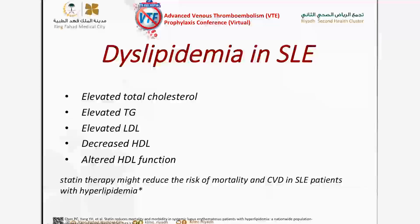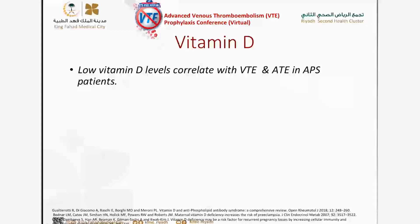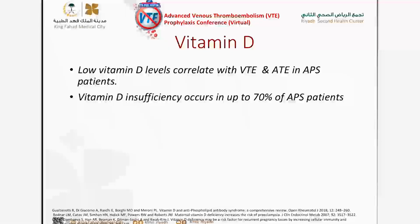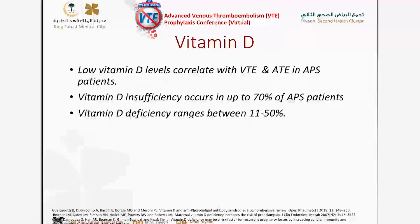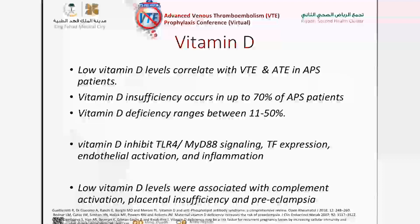Statin therapy is associated with reduced mortality and cardiovascular events in lupus patients with hyperlipidemia. However, using statins in the absence of dyslipidemia is still debated. Vitamin D deficiency correlates with venous and arterial thrombotic events in APS patients — insufficiency affects up to 70% of APS patients, and deficiency up to 50%. Vitamin D inhibits TLR4, MYD88 signaling, tissue factor expression, and endothelial activation, thereby reducing inflammation. Low vitamin D level is also associated with complement activation, placental insufficiency, and preeclampsia.